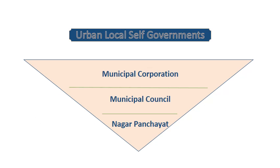Urban areas have a system of local self-government to provide civic amenities like electricity, water, sanitation, etc. The local self-government body for an urban area is called a municipality. In India, there are three main types of municipalities: Nagar Panchayats, municipal councils, and municipal corporations. Semi-urban areas have Nagar Panchayats. Cities with a population of less than 10 lakh have municipal councils, and cities with a larger population have municipal corporations.